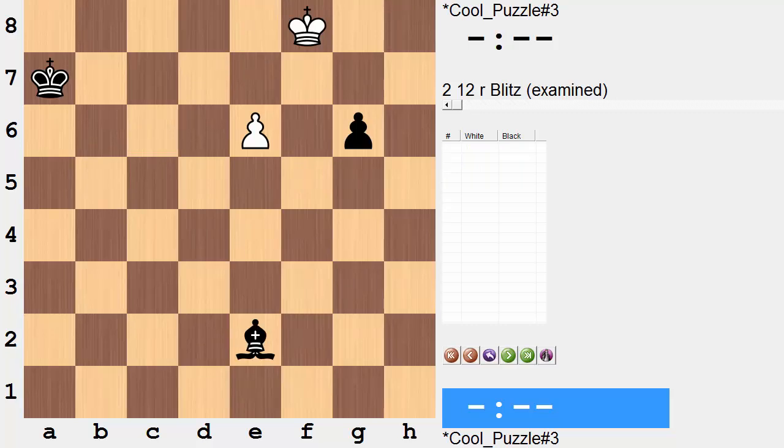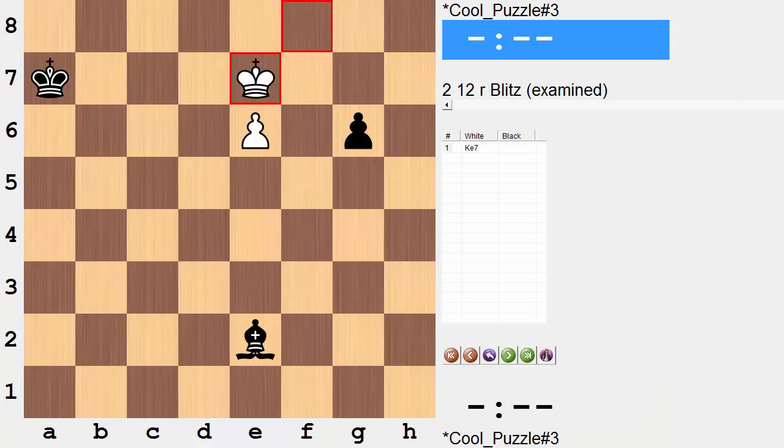So what exactly is the trick here? Well, the first move, the solution to this one, is Ke7. Seems a bit odd, of course, obstructing your own pawn, but it certainly will have its point revealed soon enough.